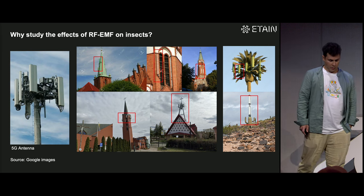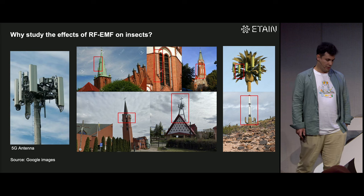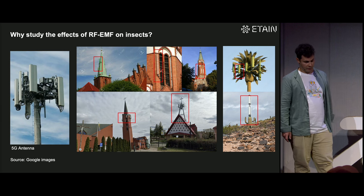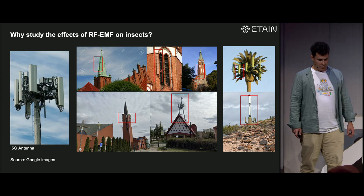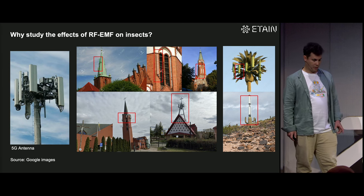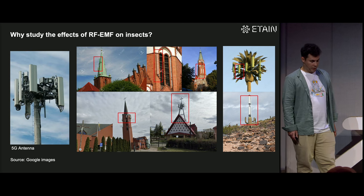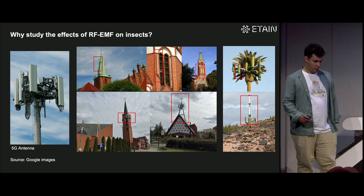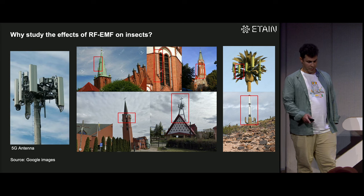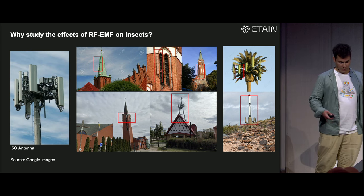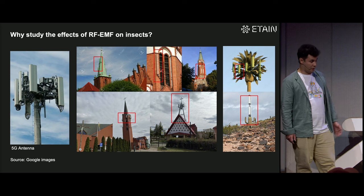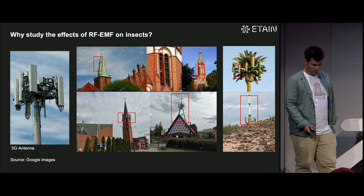So why study radio frequency electromagnetic waves on insects? With 5G spreading today, we need more antennas because the frequencies are higher and cover less distance. On the left you can see normal antennas on top of buildings, but lately they also apply antennas on church towers or even palm trees. More antennas in human centers might raise the exposure for people or other organisms like insects.